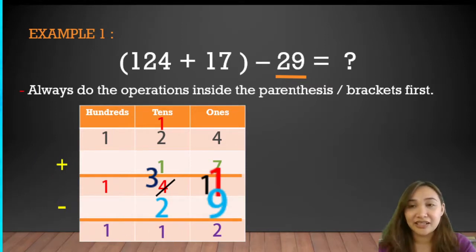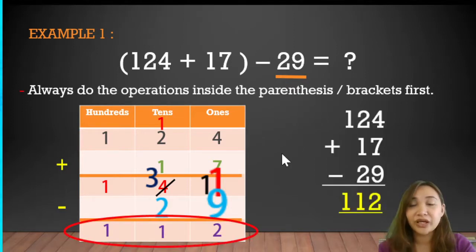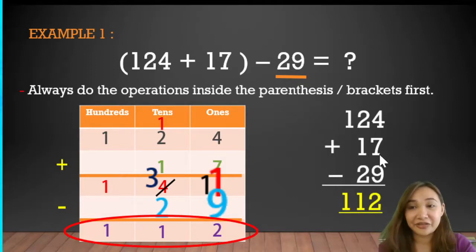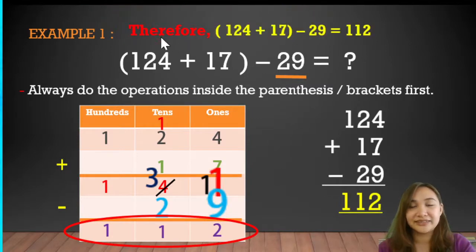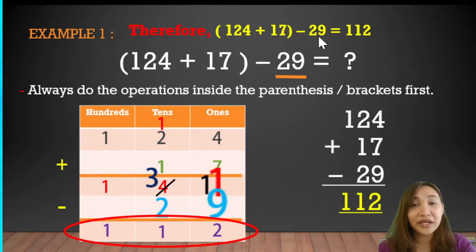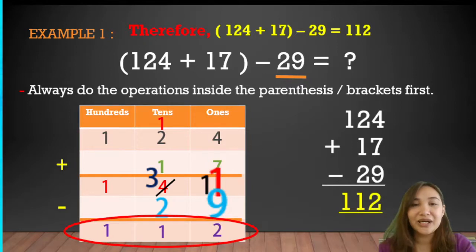Our answer is 112. So: open parenthesis 124 plus 17 close parenthesis minus 29 equals 112.